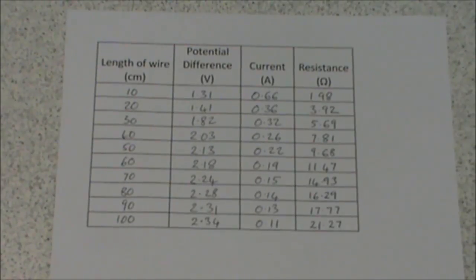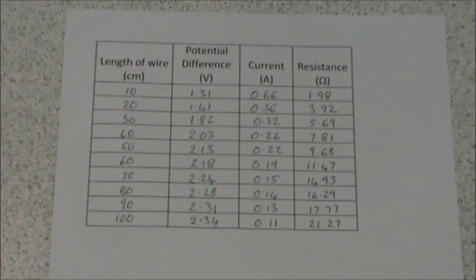You can now check your calculations against my calculations. We're now going to plot a graph of our results. Length is going to go on the x-axis, that's the horizontal one, and resistance is going to go on the y-axis, the vertical one. We can see that the length of wire goes up to 100, and our resistance goes up to 21.27. So we need to choose an appropriate scale. 0 to 100, going up in steps of 10 on the x-axis is perfect. And on the y-axis, going up in fives will give us a suitable scale.